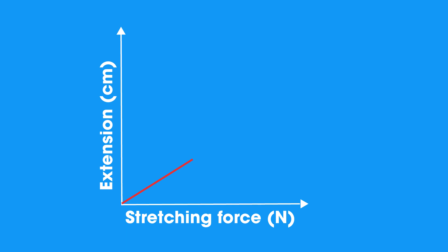That means the extension will double if the force doubles, it will treble if the force trebles, and so on. This relationship is known as Hooke's Law.